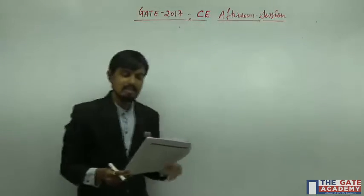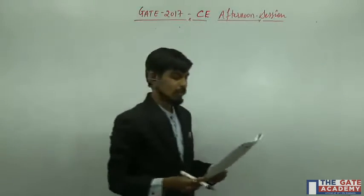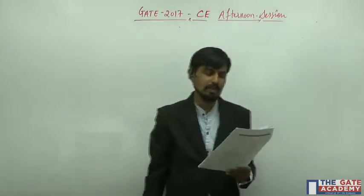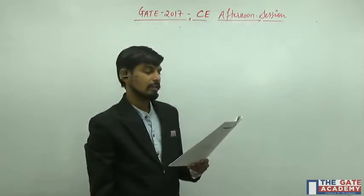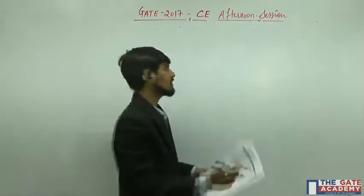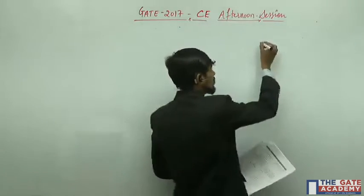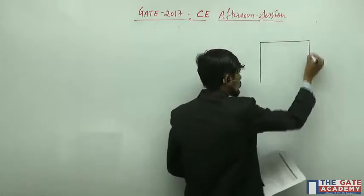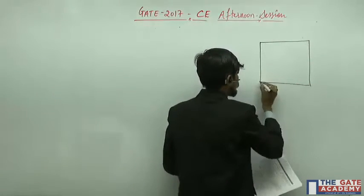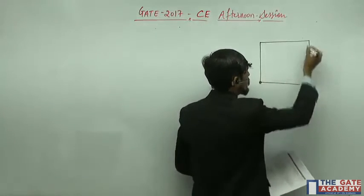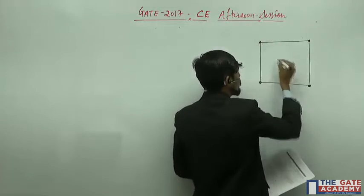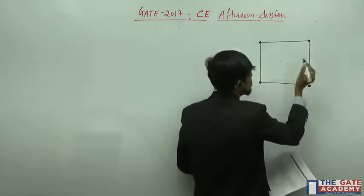A catchment is idealized as 25 km by 25 km². It has 5 rain gauge stations — one at each corner and one at the center. As shown in the figure, there are 4 rain gauges at the corners and one at the center.